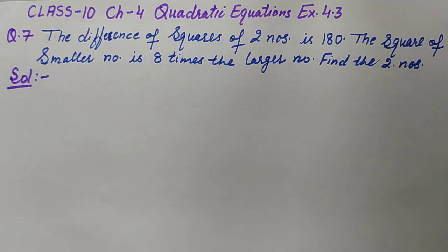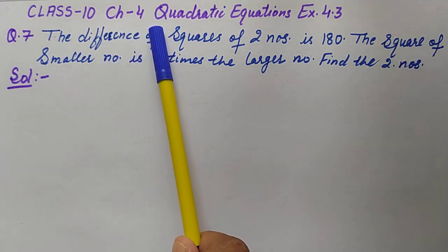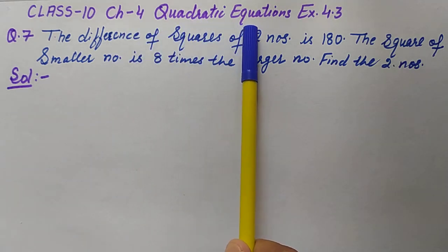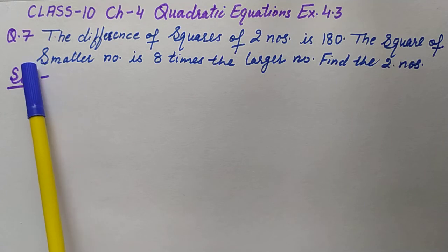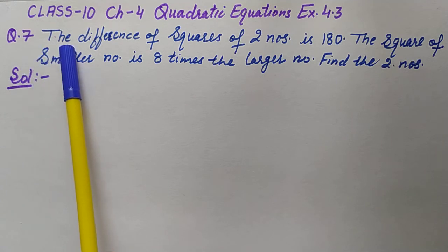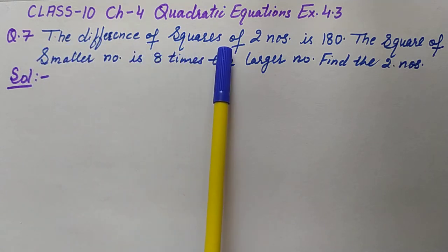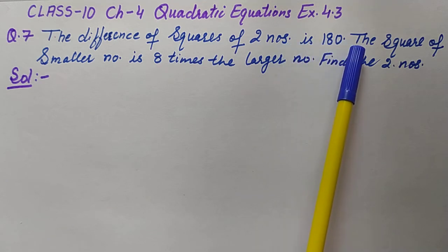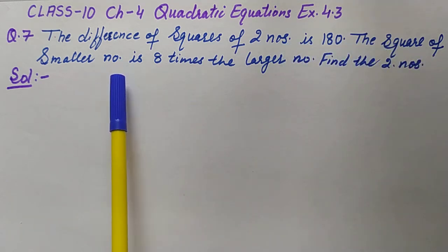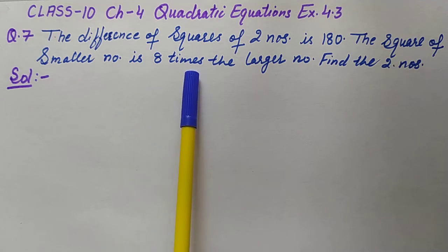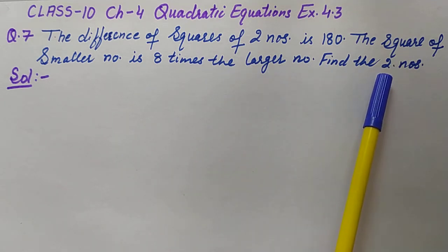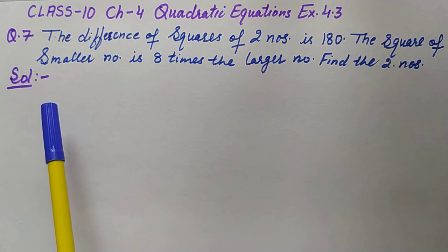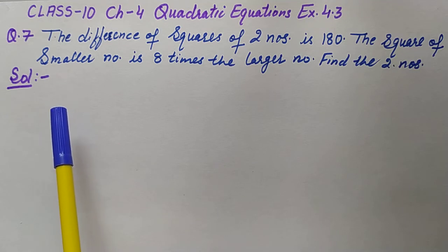Welcome to my YouTube channel. This question is from Class 10, Chapter 4, Quadratic Equations, Exercise 4.3, Question 7. The difference of squares of two numbers is 180 and the square of the smaller number is eight times the larger number. Find the two numbers.